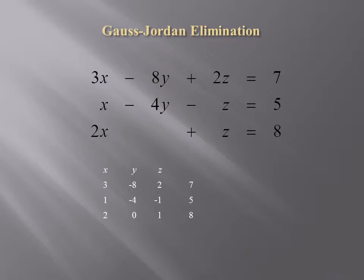Our strategy is as follows: we're going to want to eliminate the x from the second and third equation. What that means is that we want to get a 0 where the 1 and 2 are in the first column. That process is called pivoting, and what we'll be doing first is pivoting on the number in the first row, first column — the number 3. That number 3 will stay the same, and the numbers 1 and 2 will both become 0.